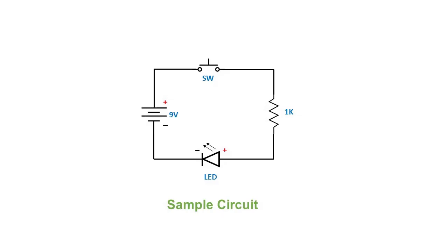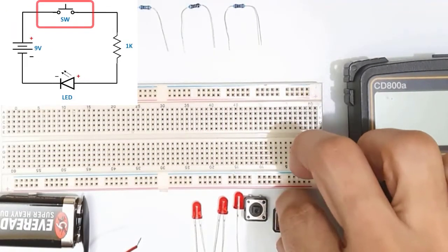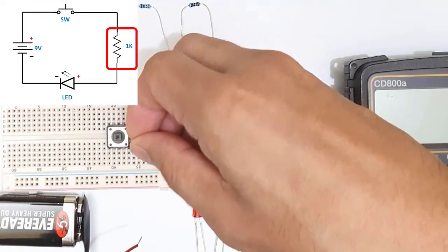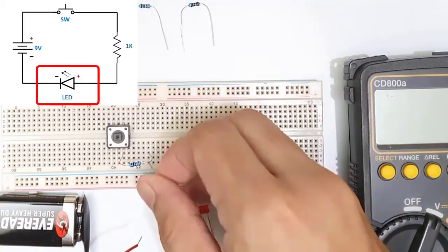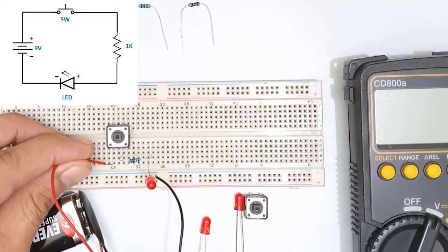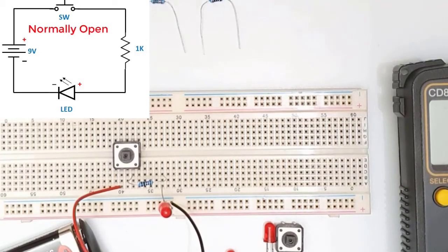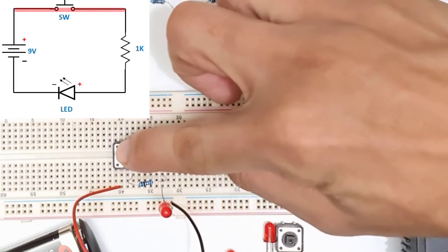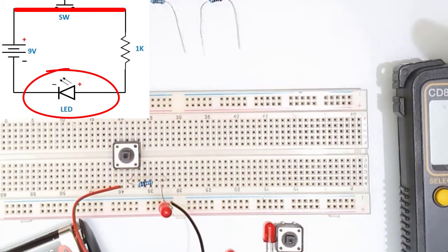Now let's try another circuit that consists of a tactile switch, a resistor, and an LED. This connection is in series. To implement it on breadboard, I'll start with the switch and mount it in the middle, connect the resistor to pin 2 of this 4-pin tactile switch, and the other terminal of the resistor to the positive terminal of the LED. The negative terminal of the LED is connected to the negative terminal of the battery, while the positive terminal of the battery is connected to pin 1 of the switch.